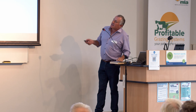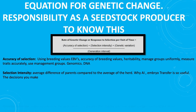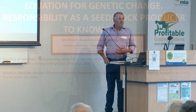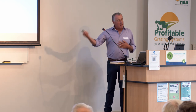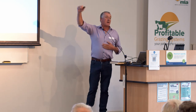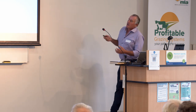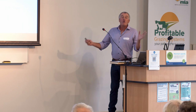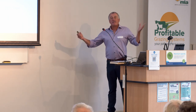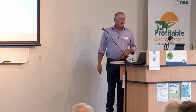Selection intensity — which animals do you choose as a seedstock producer or commercial producer to make a difference? Selection intensity is about the animals you're choosing in the next generation: how different are they to the average of your herd? That's where AI and embryo work is powered by. If I can choose animals that are a lot better than my average, I've got more chance of shifting the average within my herd.